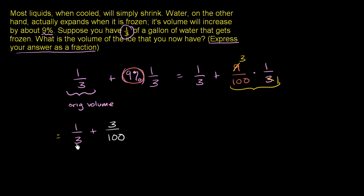And now we have to add two numbers that have different denominators. So let's find a common denominator. So this is going to be equal to, well, the least common multiple of 3 and 100, and they share no common factors. So it's really just going to be the product of 3 and 100. The least common multiple is 300. So it's going to be something over 300 plus something over 300.